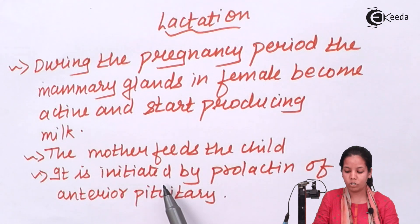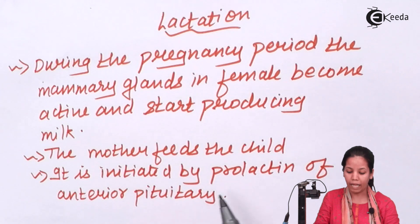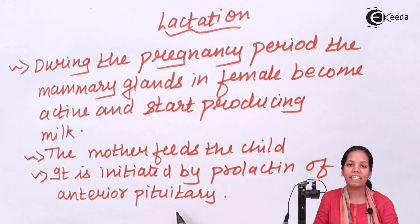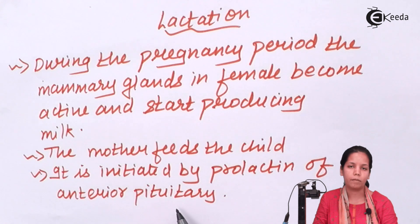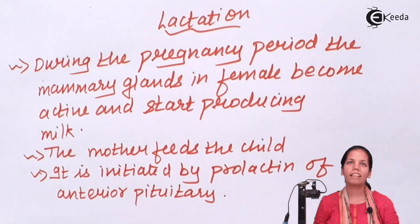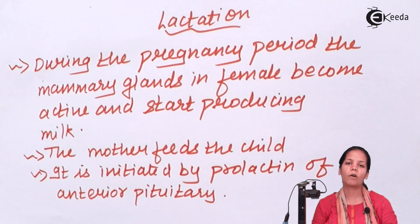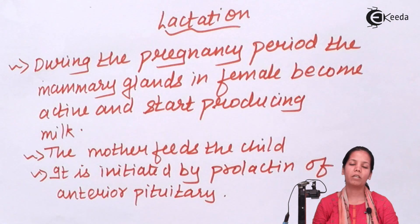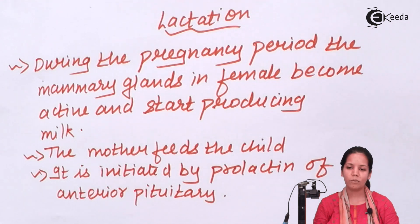The formation of this milk is initiated by the production of prolactin, the milk formation hormone that is released by the anterior pituitary. In this part of the chapter we covered lactation and how it is very crucial once the child is born. I hope students are very clear with this concept. Thank you.